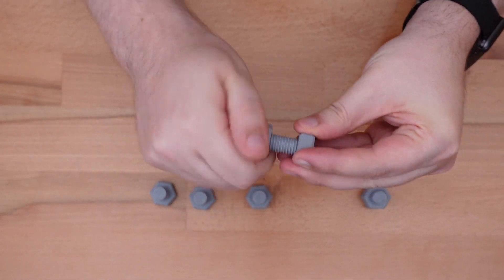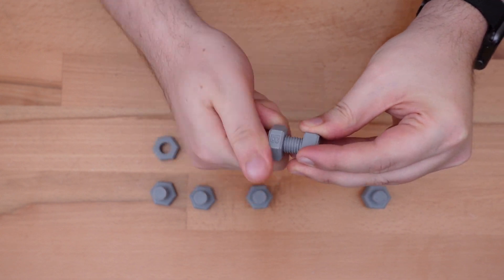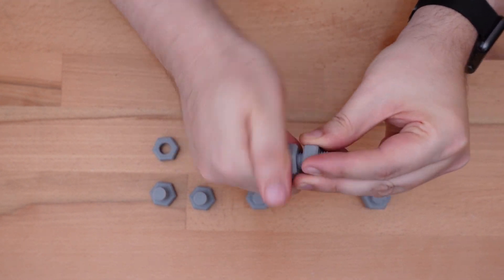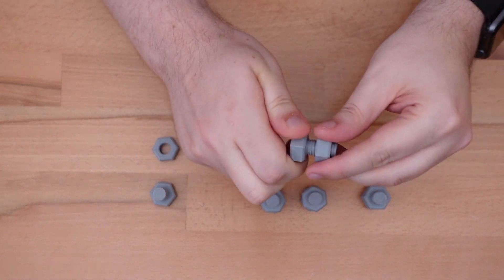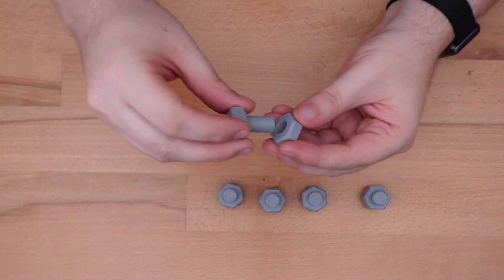The type B thread still needs a bit of work, especially when it gets to that minor elephant's foot area. But it's definitely easier. Type C and type D are no problem. And finally, type E requires no work whatsoever.